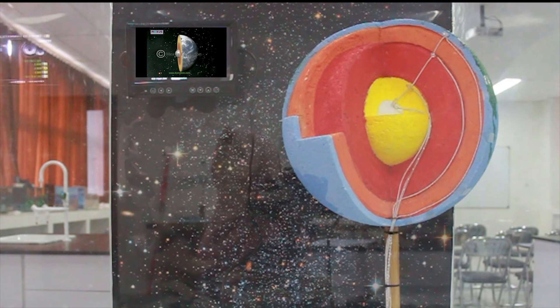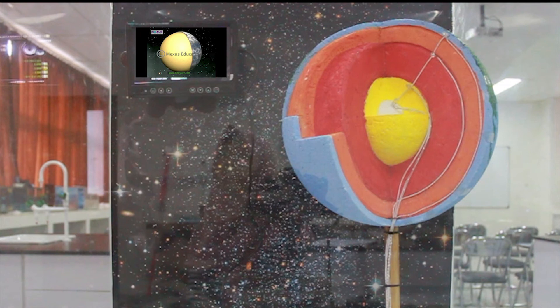The four layers of the Earth all have special functions. Now you know what the Earth looks like on both the inside and the outside.